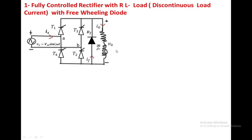A freewheeling diode is a diode which is connected across the load. The current through it is the freewheeling current.